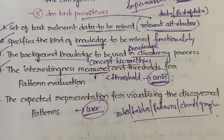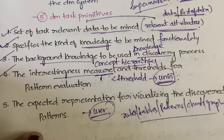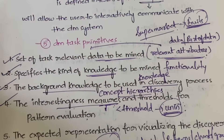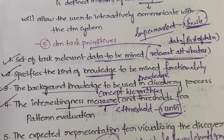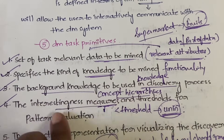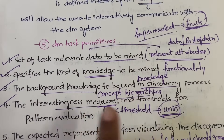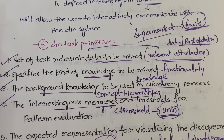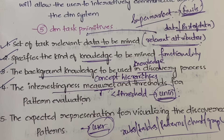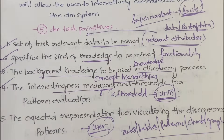So these are the five data mining task primitives: first, the set of task relevant data to be mined; second, specifies the kind of knowledge to be mined; third, the background knowledge to be used in the knowledge discovery process; fourth, the interestingness measures and thresholds; and fifth, the representation of the patterns that you have discovered. I hope the video is clear — it's more theory-oriented, but try to understand. See you in the next video with another topic. Thanks for watching till the end.